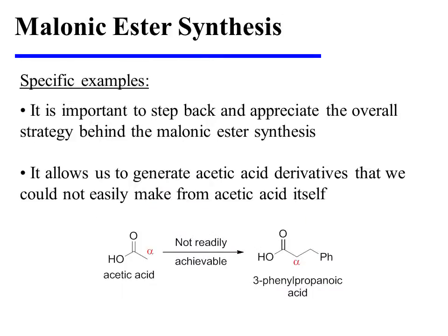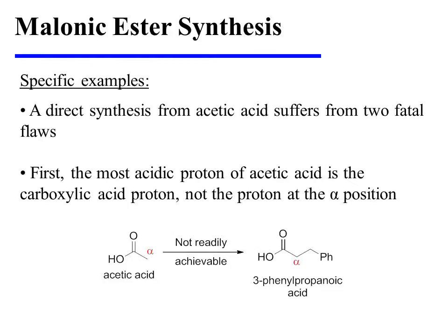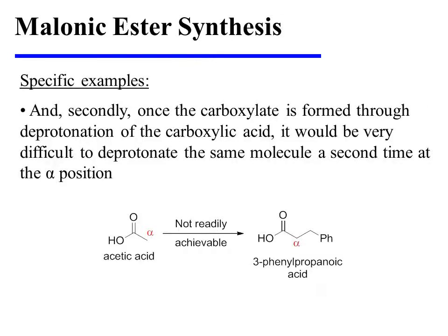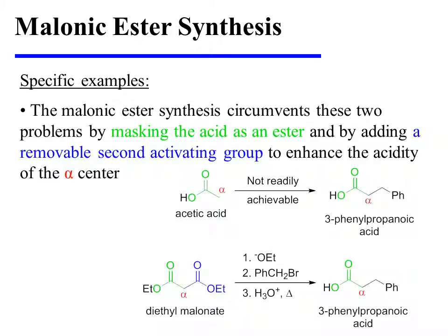It is important to step back and appreciate the overall strategy behind the malonic ester synthesis. This synthesis allows us to generate acetic acid derivatives that we could not easily make from acetic acid itself. A direct synthesis from acetic acid suffers from two fatal flaws: first, the most acidic proton of acetic acid is the carboxylic acid proton, not the proton at the alpha position; and second, once the carboxylate is formed, it would be very difficult to deprotonate the same molecule a second time at the alpha position. The malonic ester synthesis circumvents these problems by masking the acid as an ester and adding a removable second activating group to enhance the acidity of the alpha center.